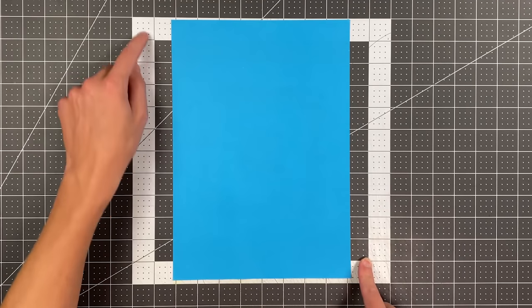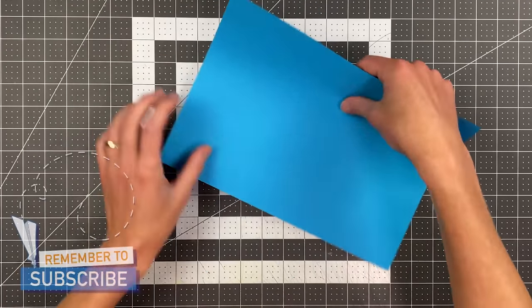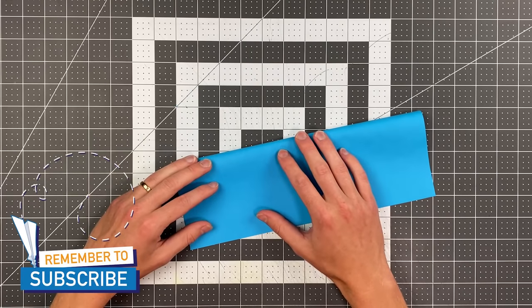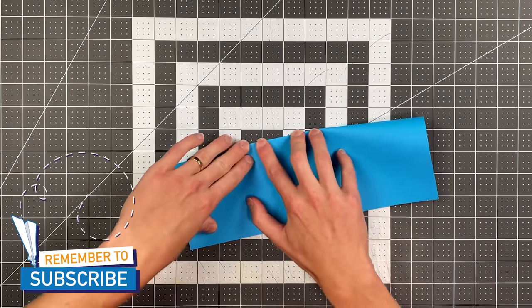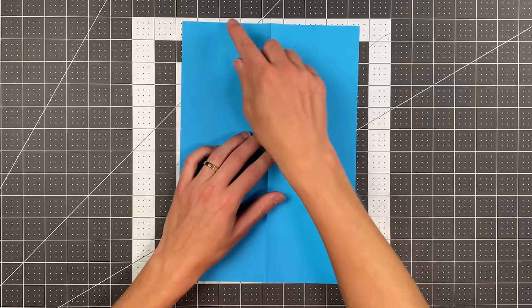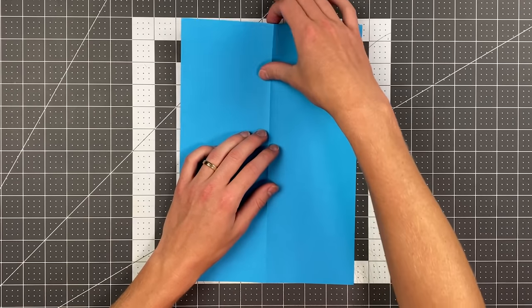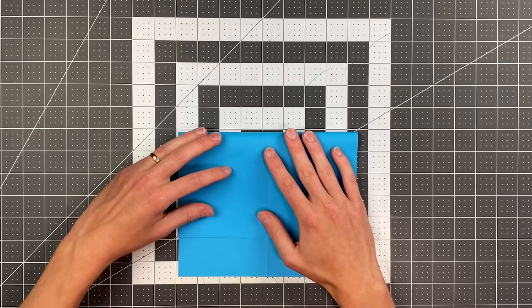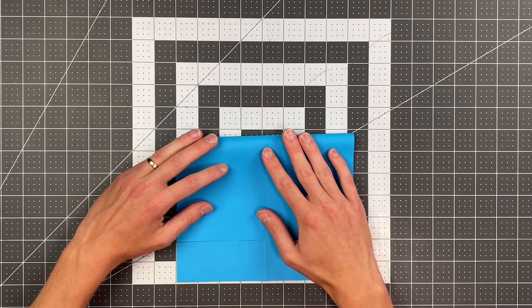We're going to begin by folding the right edge to the left edge and just folding it in half. Once you do that go ahead and open your paper up and now fold your top edge down to the bottom, leaving just two inches or five centimeters from your bottom edge.